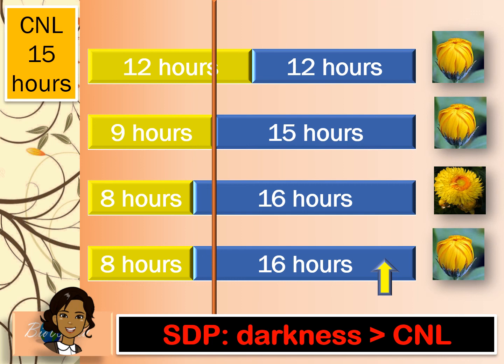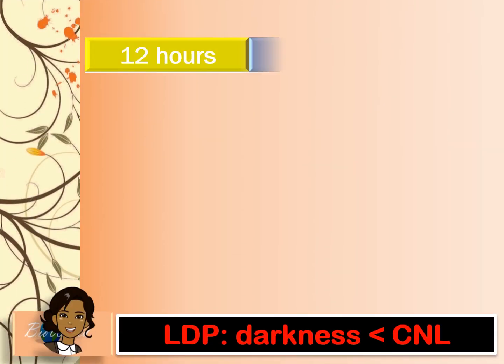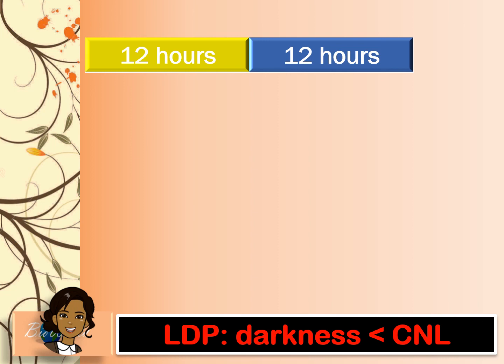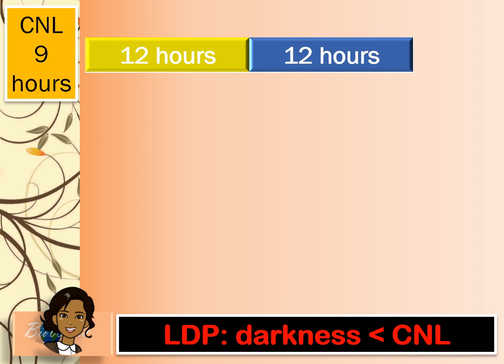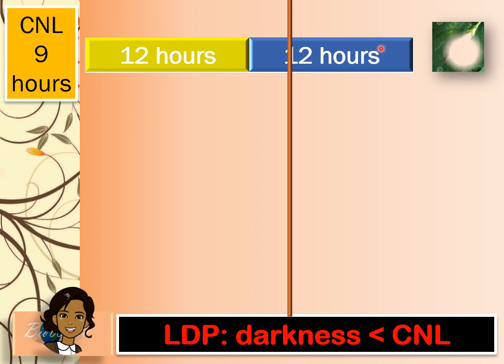Let's try with the long day plant. In the same situation, a long day plant is exposed to 12 hours of darkness, and this plant has a critical night length of 9 hours. Drawing the border, you can see that the relative darkness of 12 hours is more than the critical night length of 9 hours. But in a long day plant the relative darkness must be less than the critical night length, so the long day plant is not going to flower.